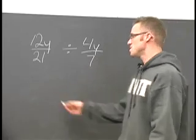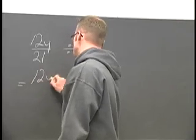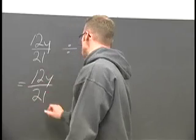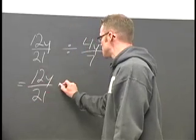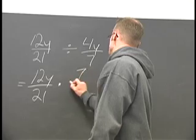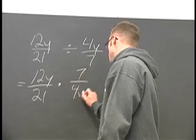We're going to set it up like this. 12y over 21 times 7 over 4y.